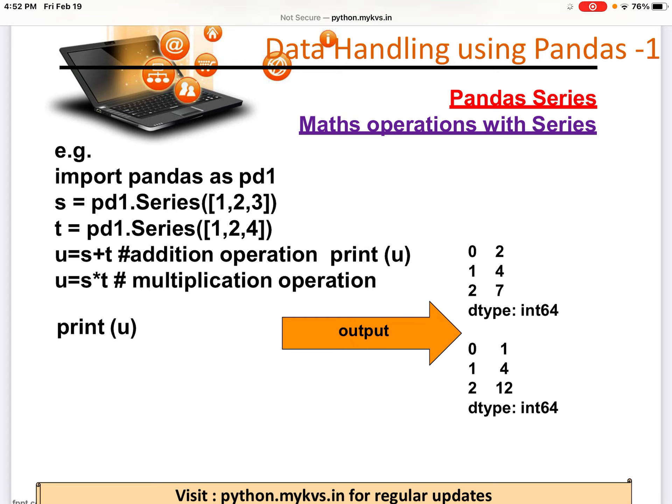First, we are doing addition. So what are we getting here? We all know that the series will be added with each other. So 1 plus 1 here, 1 plus 1 will become 2, okay? 2 plus 2 will become 4 and 3 plus 4 will become 7. So in this way, the data are getting added.